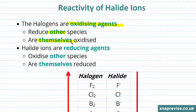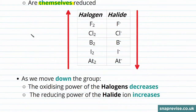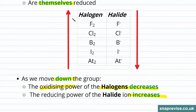The halide ions are reducing agents — they oxidize other species and they themselves are reduced. Looking at our halogen group and our halide ions, we know that as we move down the group, the oxidizing power of the halogens decreases and the reducing power of the halide ions actually increases.